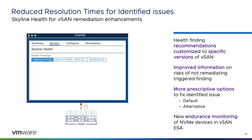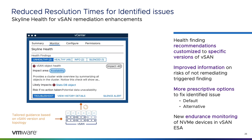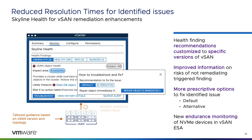Skyline Health for vSAN continues to make operation and optimization of vSAN easy and effective. In vSAN 8 Update 2, we've built on several improvements from vSAN 8 Update 1. Triggered health findings will now show tailored guidance based on the version of vSAN running and the topology configured. We've also included more information to help understand not only how to resolve an issue, but what might happen if the health finding is silenced or ignored. Recommendations are much more prescriptive and in many cases provide more than one way to resolve an issue.